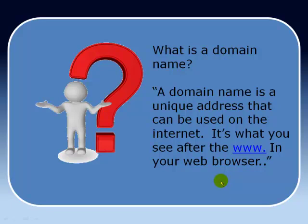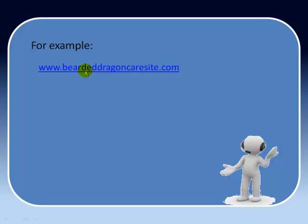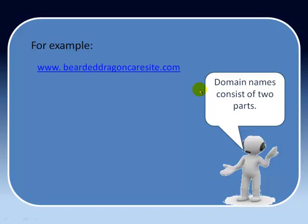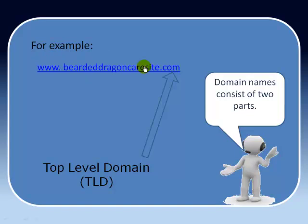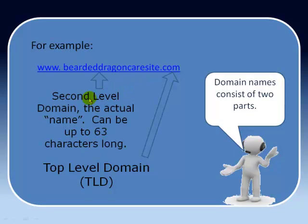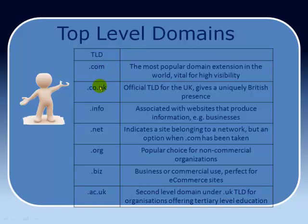Now I'm going to start thinking about what exactly is a domain name. A domain name is a unique address that can be used on the internet — it's what you see after the www. in your web browser. So you type this in and that will take you to the website you're looking for. As an example, here is the domain name of the site we looked at earlier: www.beardeddragoncaresite.com. Every domain name consists of two key parts. First of all we've got what's called the top-level domain — in this case .com. .com is the most commonly used, and it's the one we try to use for most visibility on the web. If you can't get this one for your domain name, then an alternative would be to use .net.